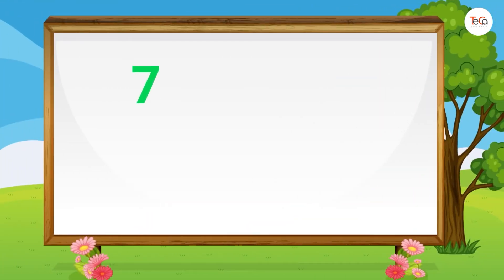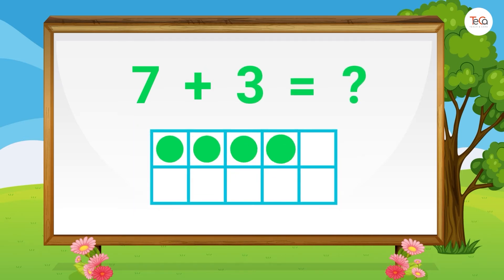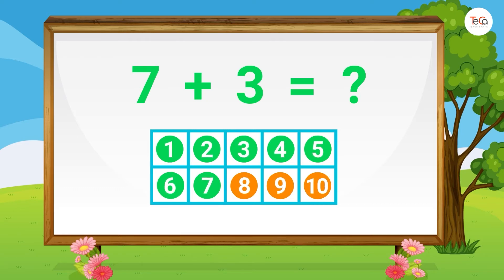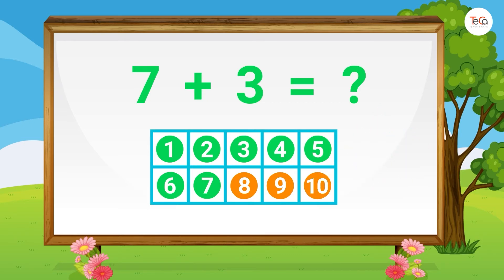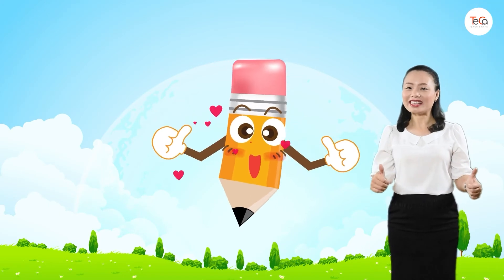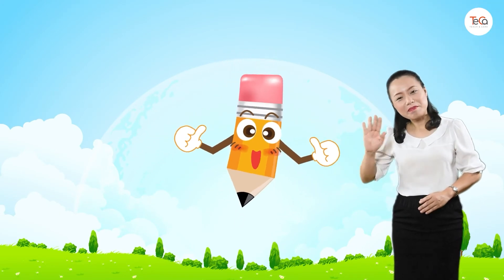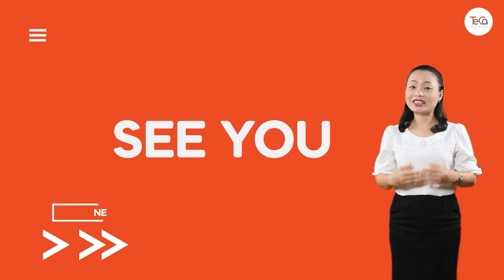And the last one... 7 plus 3 equals... Draw 7 dots, then 3 dots. Look, our 10 frame is full, which shows number 10. So 7 plus 3 equals 10. Great! You've finished. Bye for now and see you soon in the next lesson.